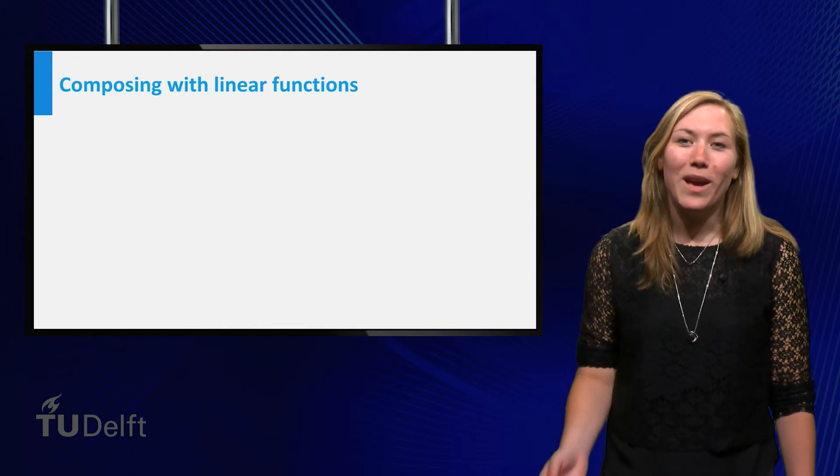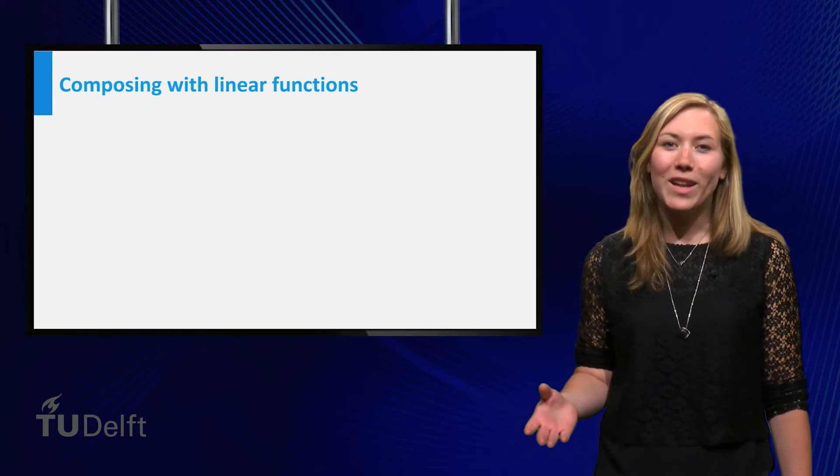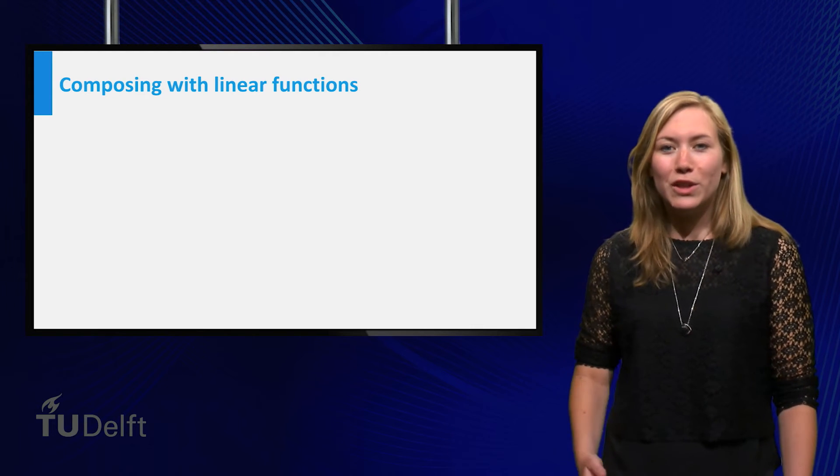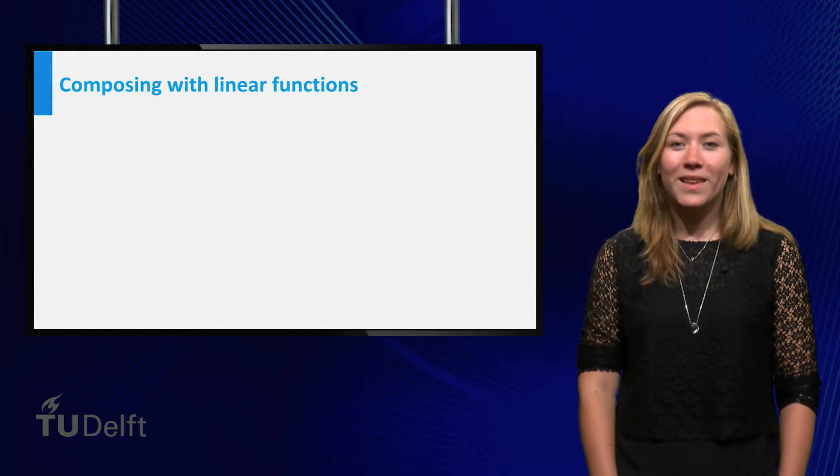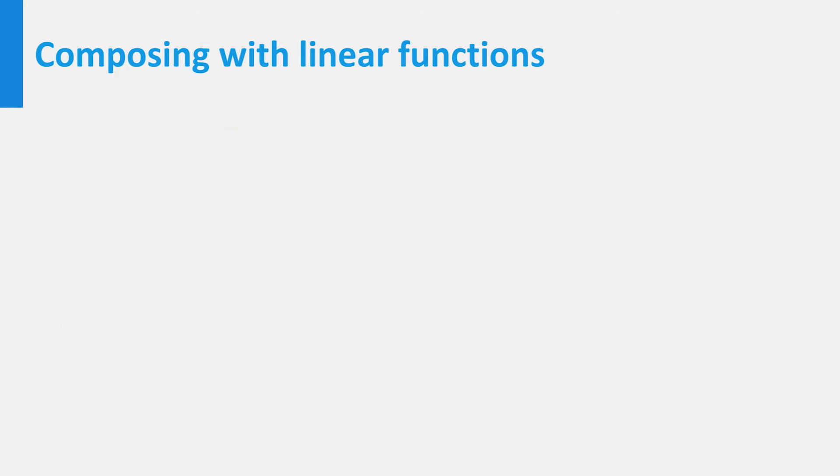Typically, it is hard to identify what the graph of a composed function looks like, but when you compose a function with a linear function, the graph changes predictably. The graph of f of x plus a is equal to the graph of f but shifted a upwards.